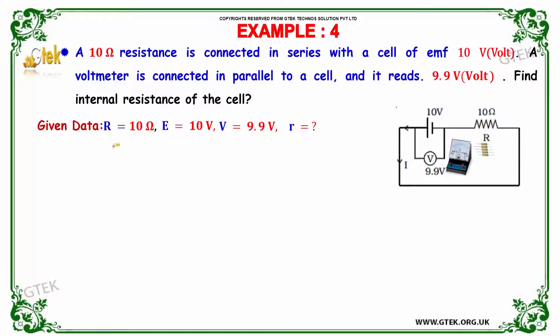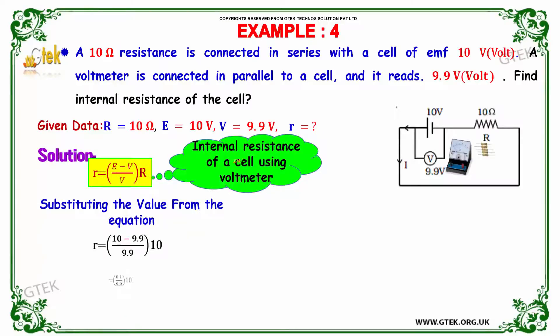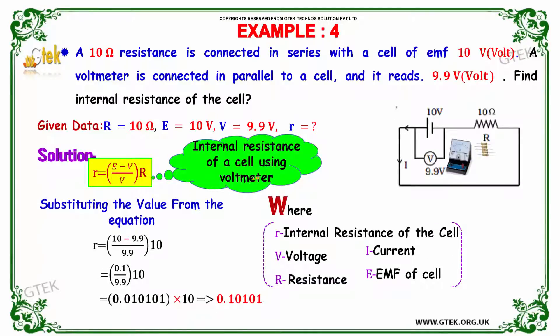So we know R, E, V and R. So the internal resistance of your cell using voltmeter can be calculated using the formula r is equal to E minus V divided by V into R.